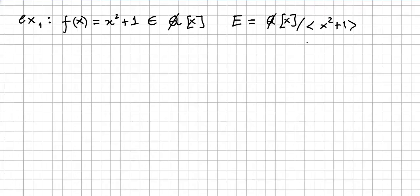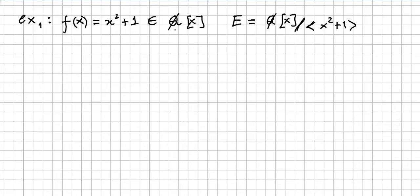This video is an example on extension fields — this is a first example. We have the polynomial x squared plus 1 in the ring of polynomials, and we have this extension field where we take the ring of polynomials divided by the ideal generated by x squared plus 1. It is obvious that x squared plus 1 has no zero in this ring of polynomials.